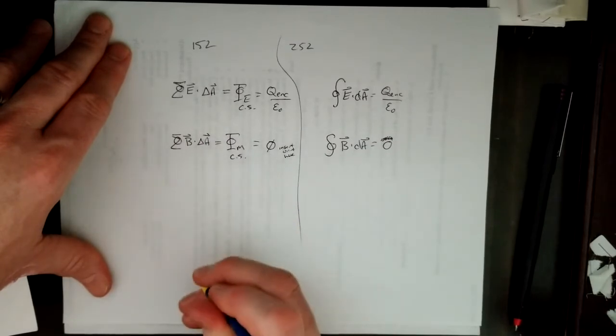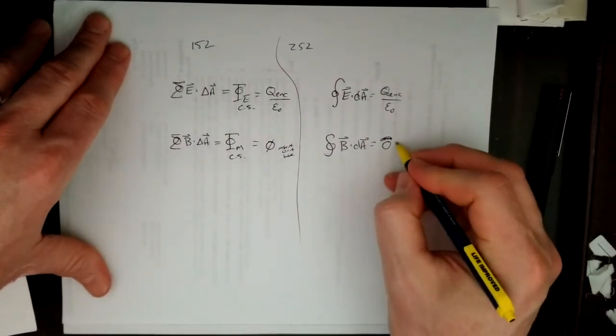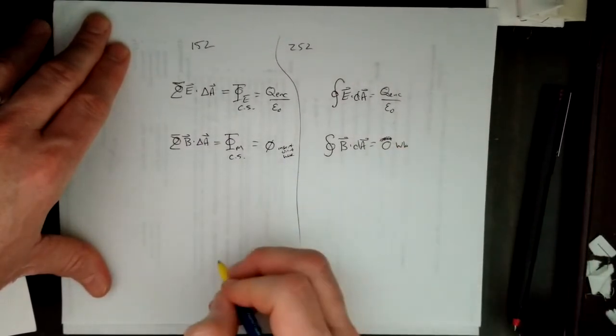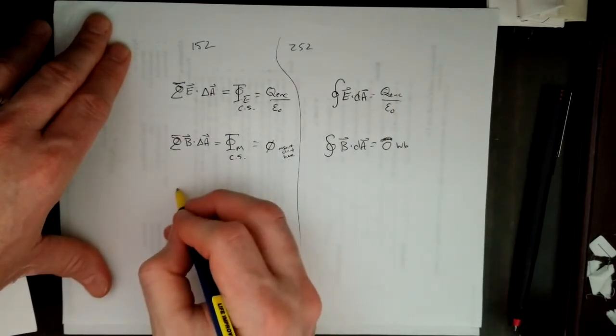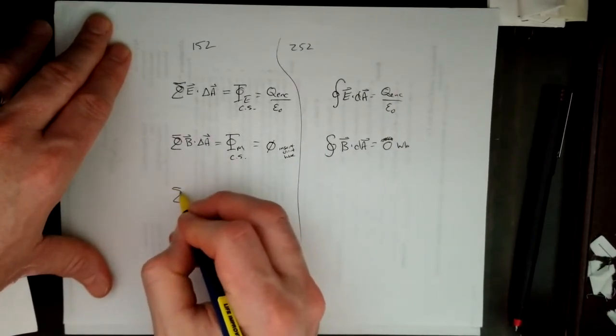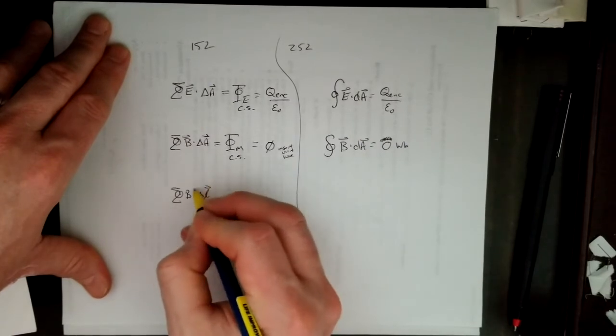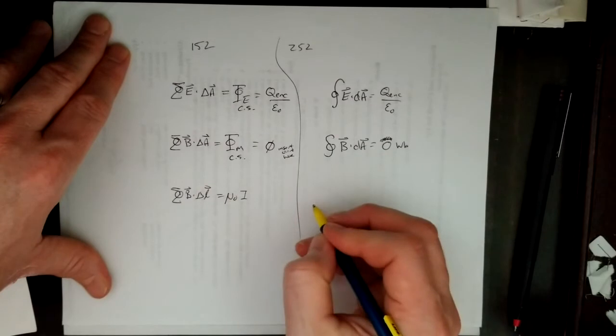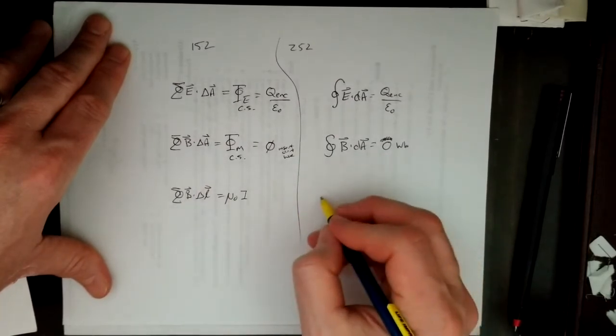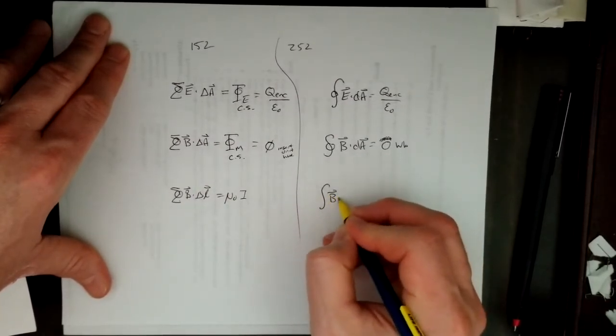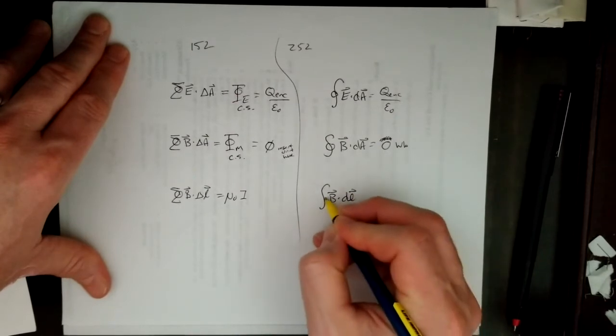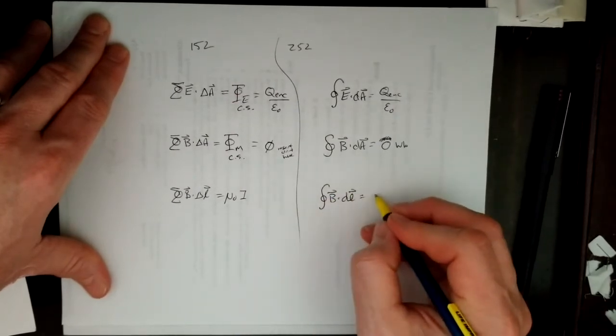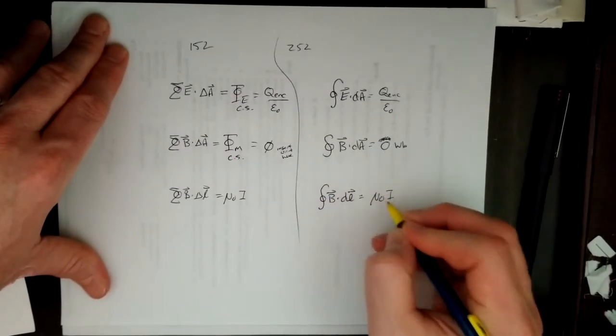Then we have, oh, what the heck. We'll put down Weber's. And now we have the sum of b dot delta L along a closed loop is equal to mu naught I. Or b dot dL around a closed loop is equal to mu naught I. And this is Ampere's law.